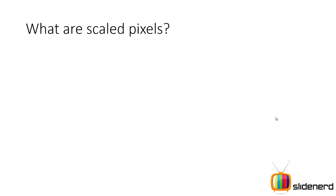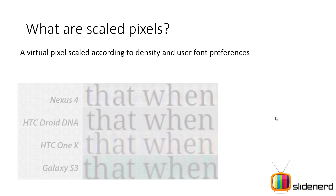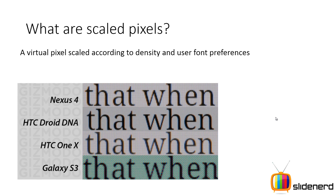Next, what are scaled pixels? Scaled pixels use the same concept as DP but are used only for fonts. Virtual pixels scale according to both the screen density and the user's font preferences. Whenever you use fonts you want them to be in the same proportion across different screen sizes and densities, and scaled pixels ensure that happens properly.